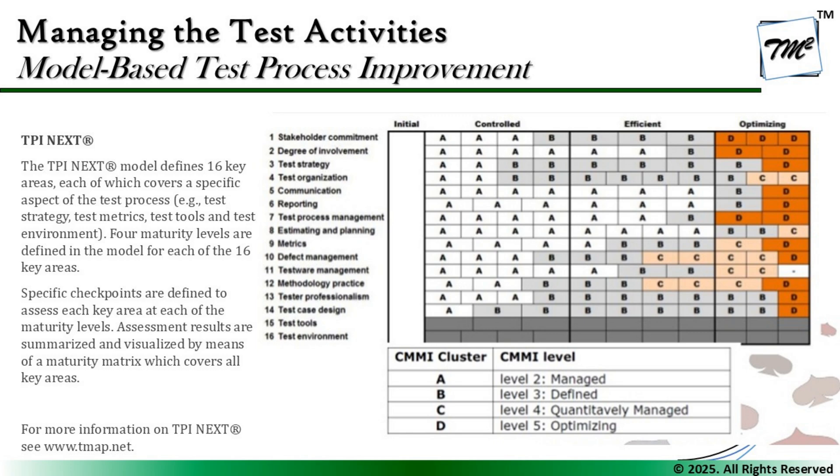These 16 areas are evaluated at each maturity level for their efficiency, and rated on whether they need improvement or are currently at a good, excellent, or improving status — represented as ratings A, B, C, or D. When an organization reaches status D, they are considered highly mature with a well-established process. The 16 key areas are not in the exam syllabus, so you do not need to memorize them — this is purely for informational understanding of what TPI Next covers.